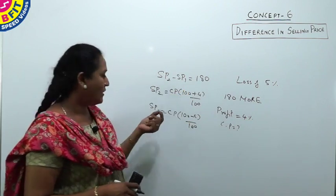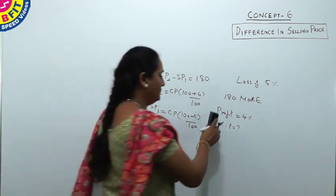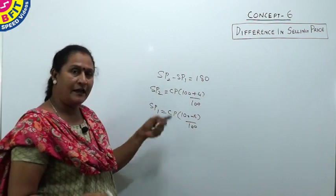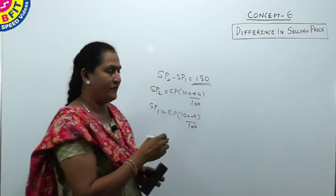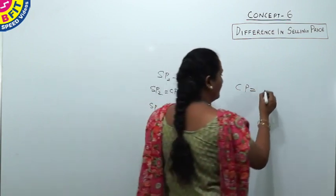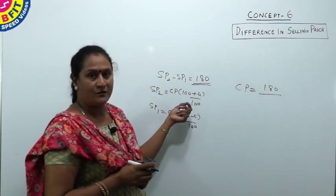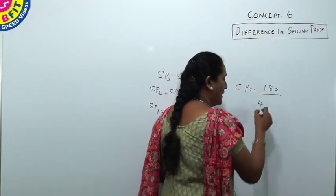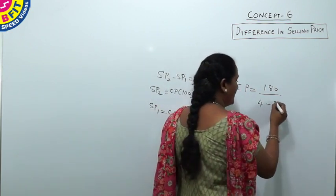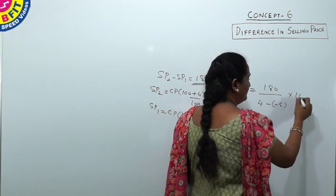By substituting SP2 and SP1 and simplifying, we get the cost price. The formula is: cost price = difference in selling price divided by difference in profit percent, multiplied by 100. When he sells for 180 more the profit is 4%, and earlier he incurred a loss of 5%. Since one is profit and the other is loss, we add the percentages in the denominator.